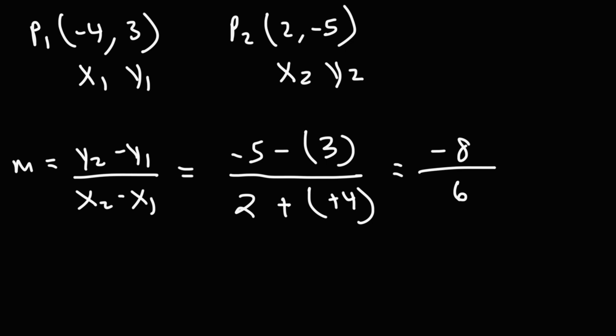So what we have here is an improper fraction. Let's see if we can reduce it. 8 is 4 times 2. 6 is 3 times 2. So we could cancel a 2. And we'll be left with negative 4 over 3. So that is the slope of the line that passes through those two points.